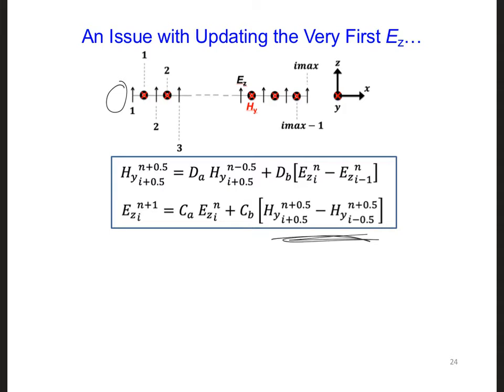This means we can't implement the update equation on the very first E_z. And analogously, we can't implement the update equation on the very last E_z either, because there's no H_y component to the right of the very last E_z.